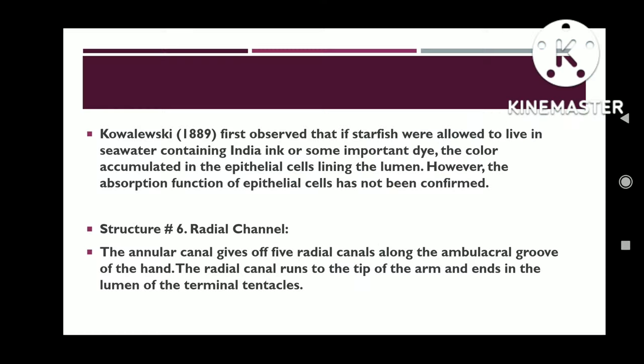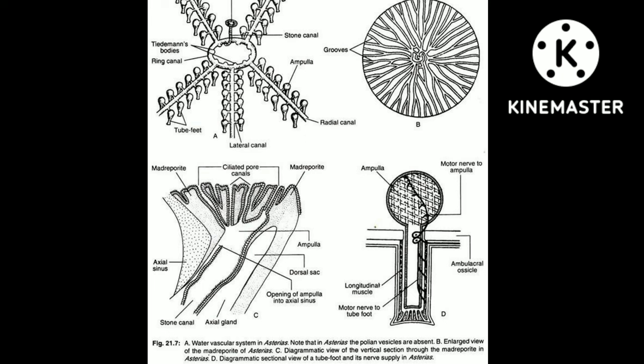Structure six: radial canal. The ring canal gives off five radial canals along the ambulacral groove of each arm. The radial canal runs to the tip of the arm and ends in the lumen of the terminal tentacles.